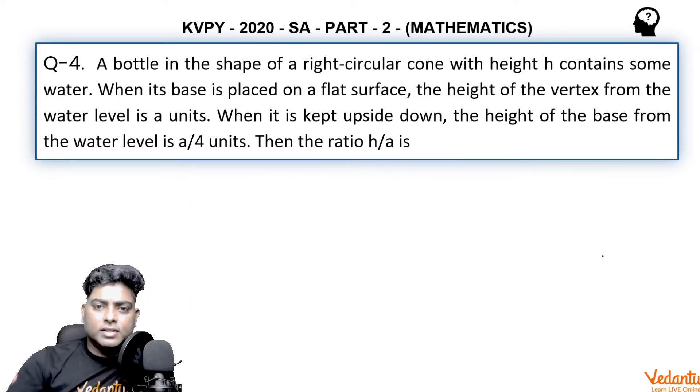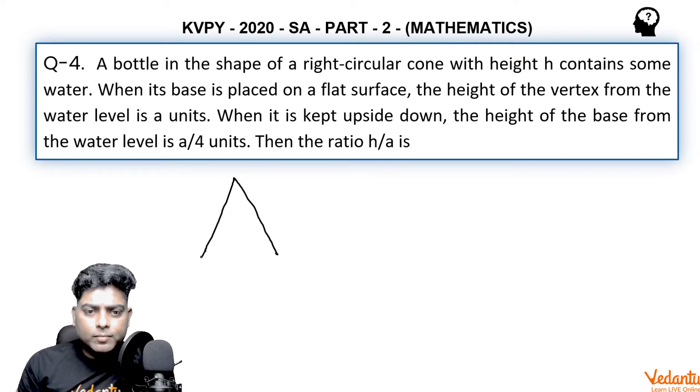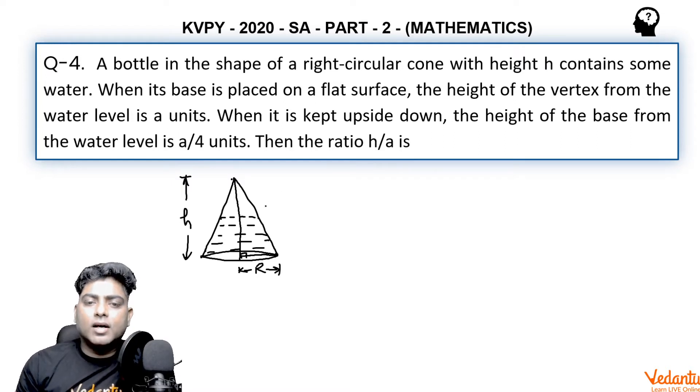Let's see how we can solve it in an easier manner. When the cone is taken to be like this, the water level is here. I am taking the radius of the base of the cone to be capital R. This height is total h, and the radius at the water level is r1, small r1.